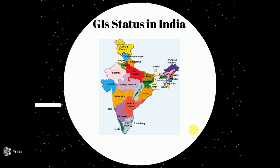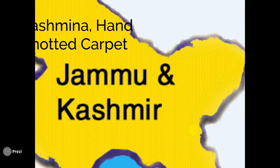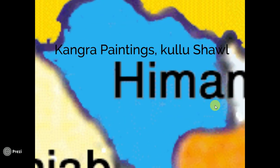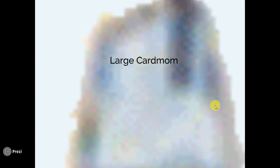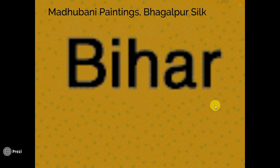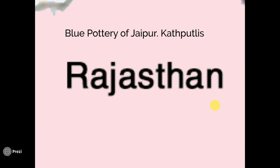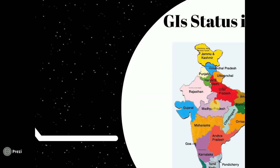Starting from the topmost state: Jammu and Kashmir has GIs for Pashmina shawls and hand-knotted carpet. Himachal Pradesh has GIs for Kangra paintings and Kullu shawls. Sikkim has GIs for large cardamom. Assam has GIs for Muga silk and Tejpur litchi. West Bengal has GIs for Darjeeling tea. Bihar has GIs for Madhubani paintings and Bhagalpuri silk. Uttar Pradesh has Lucknow chikankari craft and Banarasi saree. Goa has Feni. Karnataka has Mysore sandal soap. Tamil Nadu has Kanchipuram silk. Rajasthan has blue pottery of Jaipur and Kathputlis.